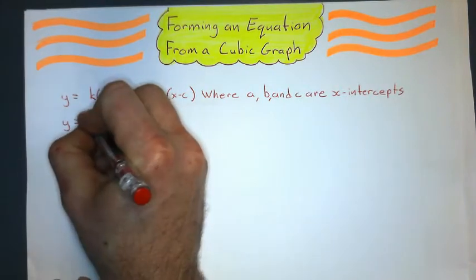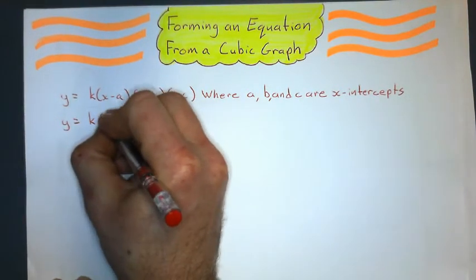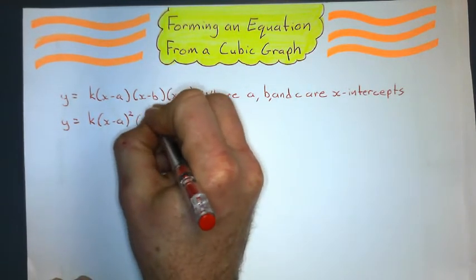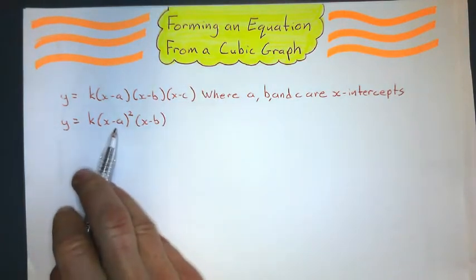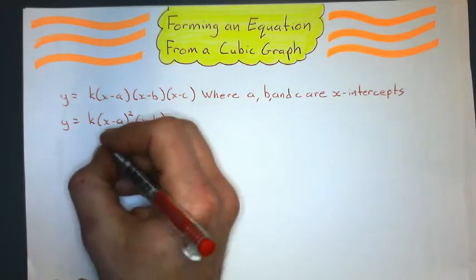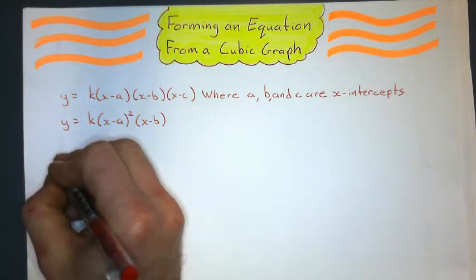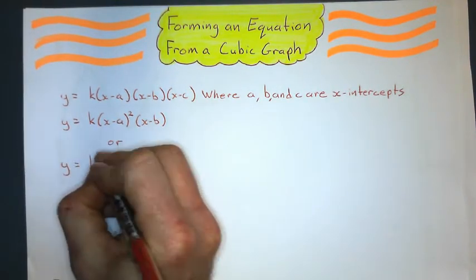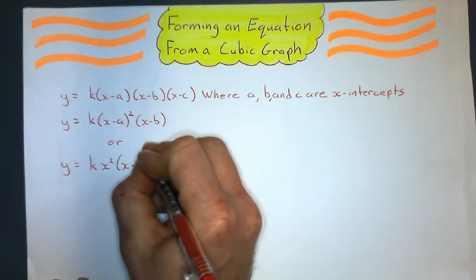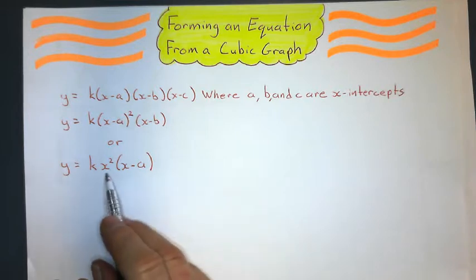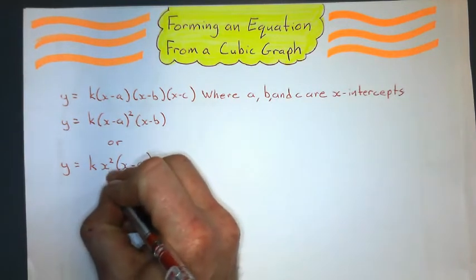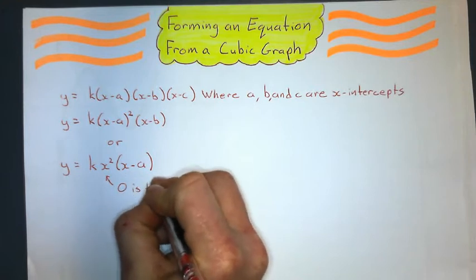The next form we could have is one where one of the factors repeats itself, written with a squared sign. On the graph, that's where the curve bounces off the x-axis. The third form is when x is on the outside of the brackets — with or without a square — which is when zero is the x-intercept.